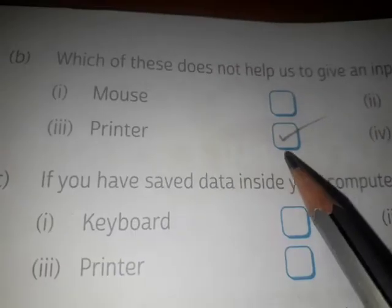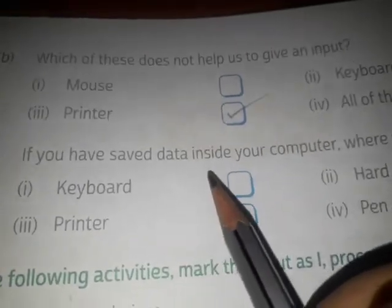Next page. Which of these does not help us to give an input? The options are mouse, keyboard, printer, all of these. We know mouse and keyboard are input devices, so the answer is printer.